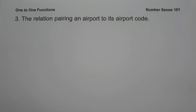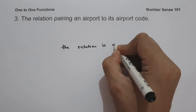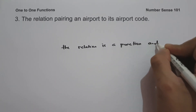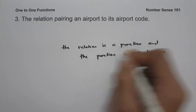On example number three, the relation pairs an airport to its airport code. This relation is a function because each airport has a unique airport code. For example, the code for Ninoy Aquino International Airport is MNL, and MNL is only assigned to that airport. Similarly, Mactan Cebu International Airport's code is CEB. No two airports share the same code, so the relation is a function and the function is one-to-one.